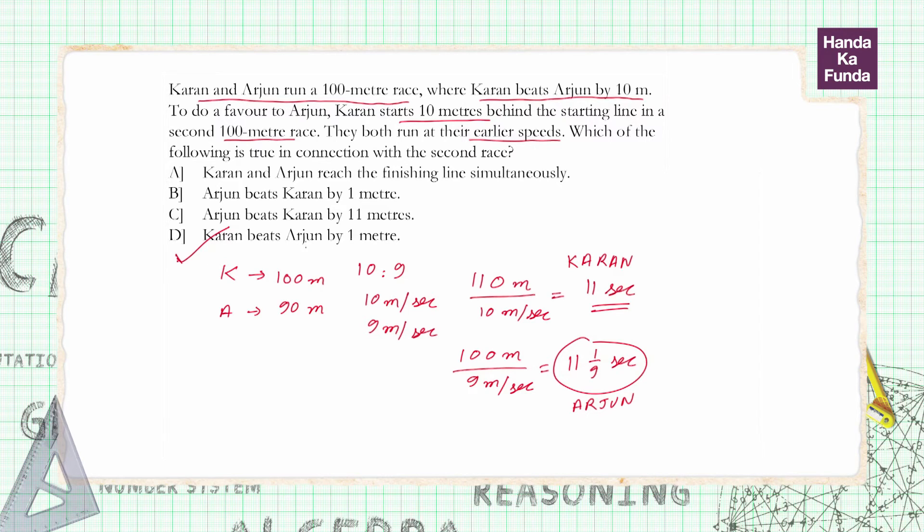And now, once you have the answer but you are still curious, how do we find out the distance by which Karan wins? Well, Arjun is running for 11 and 1 by 9 seconds, so the extra time that he is running for is 1 by 9 seconds. So in this extra time, how much distance will he cover? 1 by 9 seconds at a speed of 9 meters